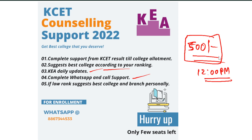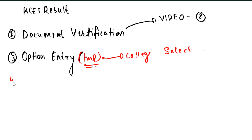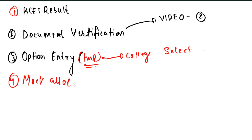Coming back to the counseling process - in option entry, you have to select your colleges. You need to carefully select the colleges here. After option entry, there will be a process known as mock allotment.